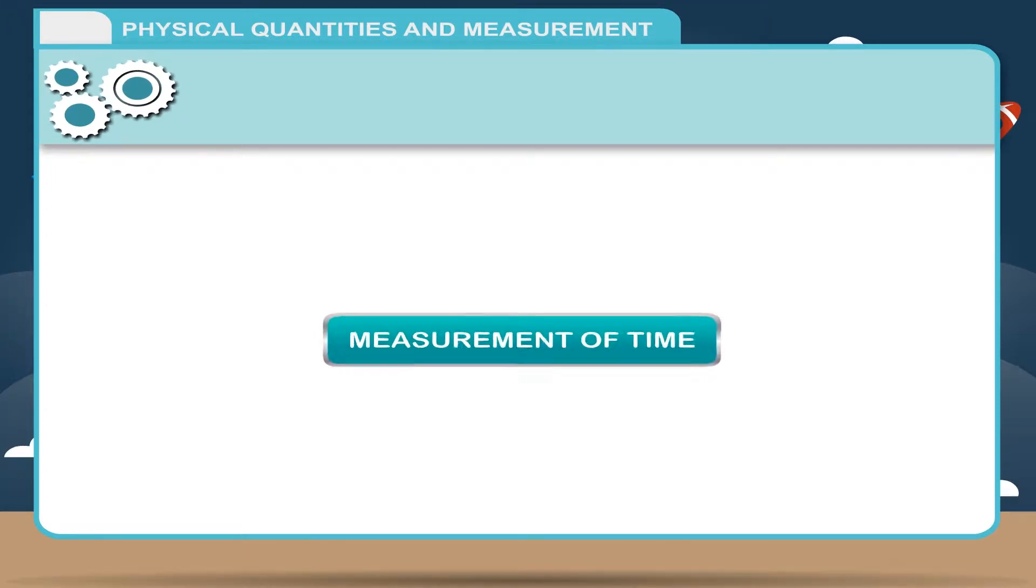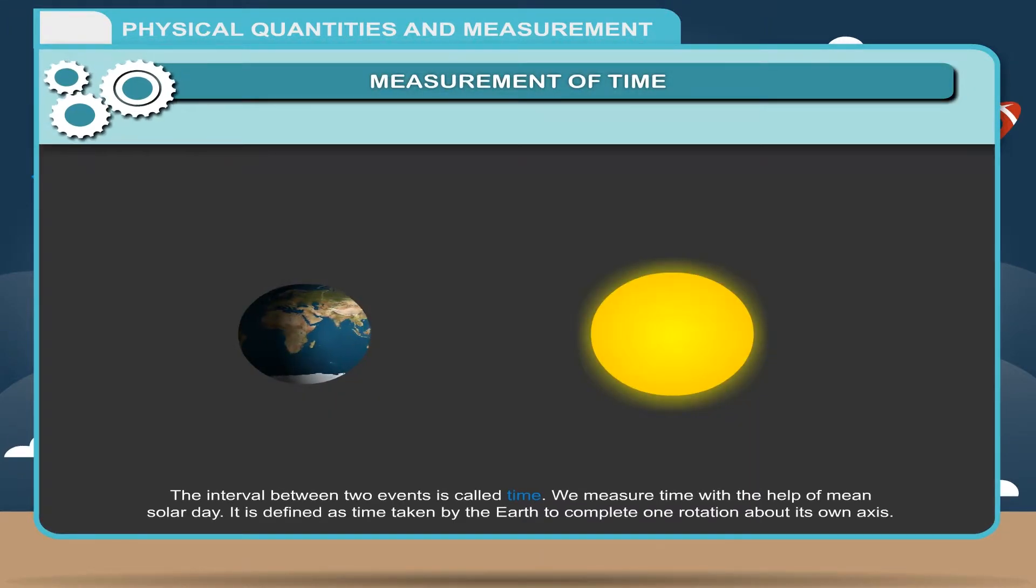Measurement of time. The interval between two events is called time. We measure time with the help of mean solar day. It is defined as time taken by the earth to complete one rotation about its own axis.